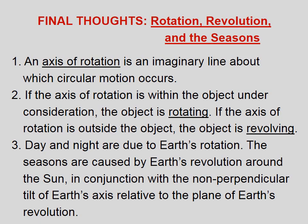Final thoughts on rotation, revolution, and the seasons: An axis of rotation is an imaginary line about which circular motion occurs. If the axis of rotation is within the object under consideration, the object is rotating. If the axis of rotation is outside the object, the object is revolving. Day and night are due to Earth's rotation. The seasons are caused by Earth's revolution around the Sun, in conjunction with the non-perpendicular tilt of Earth's axis relative to the plane of Earth's revolution.